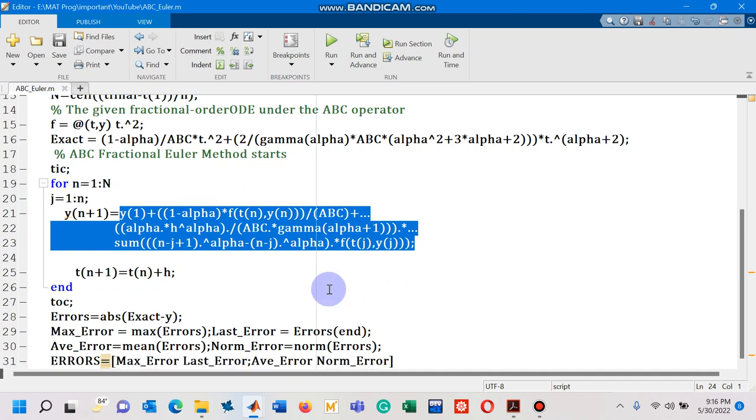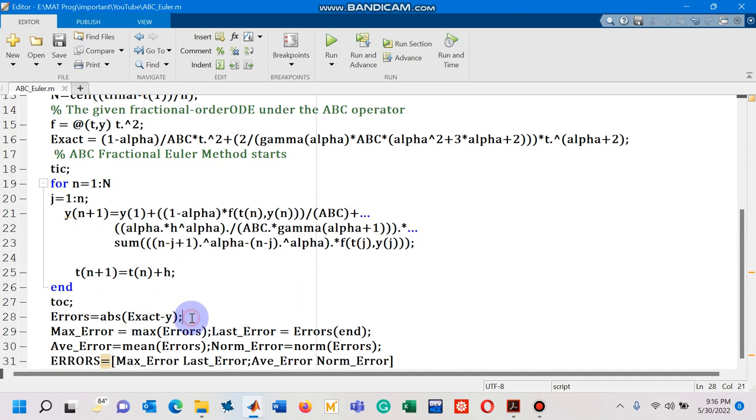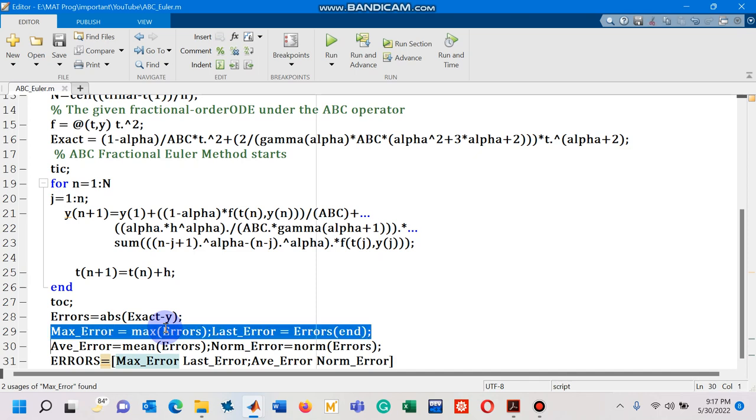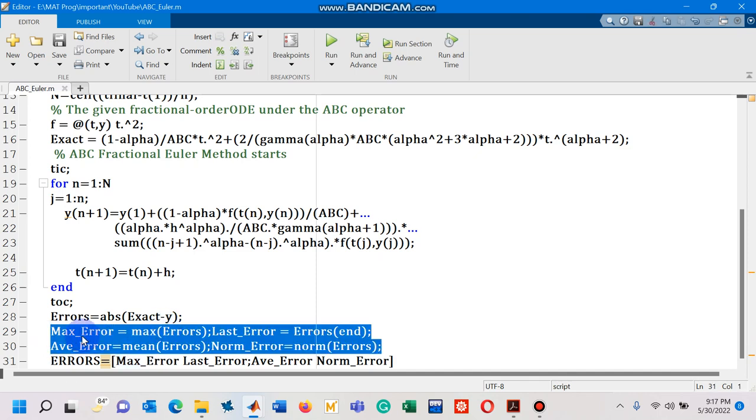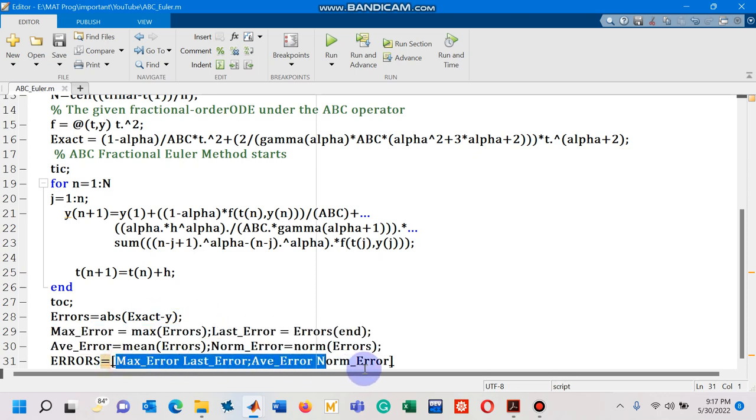Okay. So, now line number 28, I have computed absolute errors and then I have collected some errors such as maximum error, last error, average error and norm. And I have collected all of these four errors in a matrix form so that I can easily see all the four errors at one place.